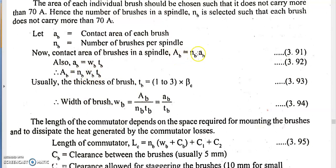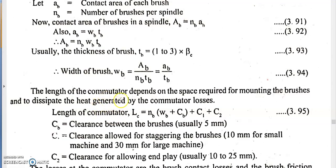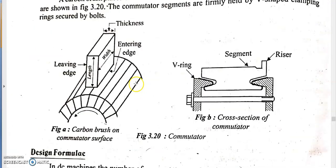Substituting into the equation, AB equals WB × TB, from which we can calculate the width of the brush. The thickness of the brush is 1 to 3 times the commutator segment pitch, given by πDC/C. Since AB is already known from the current and current density, and thickness is known, we can calculate the width of the brush. The brush dimensions include: width of the brush, thickness of the brush, and contact area WB × TB.